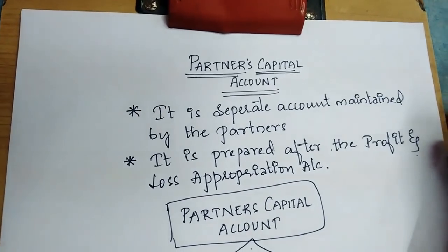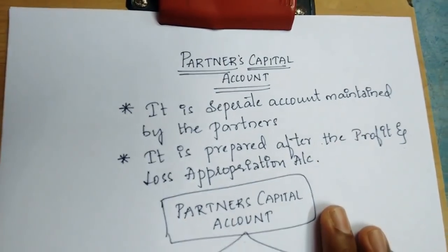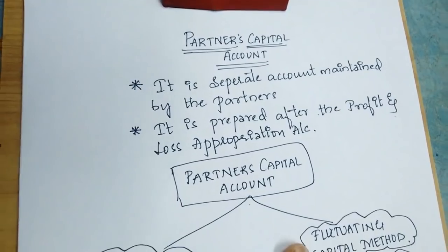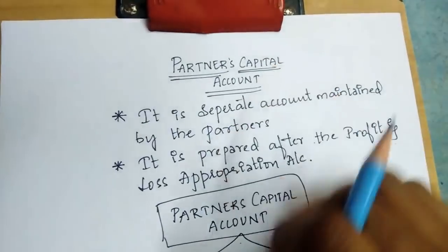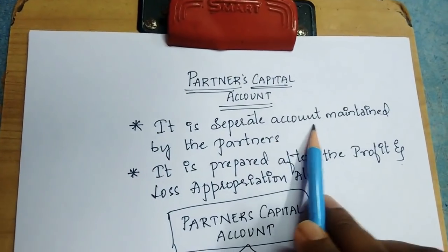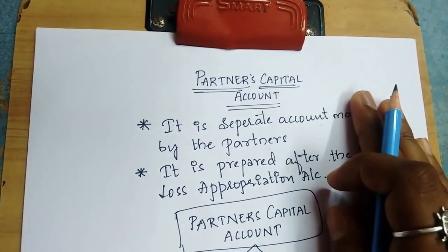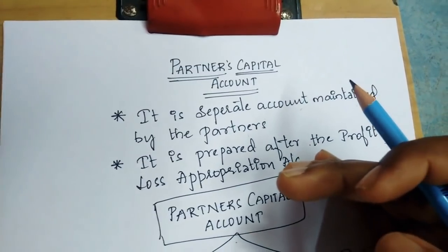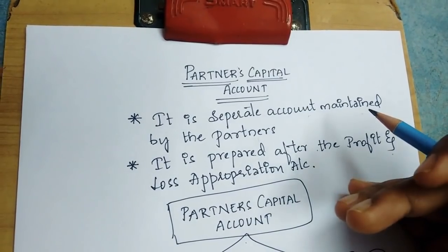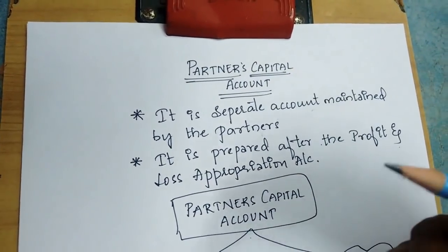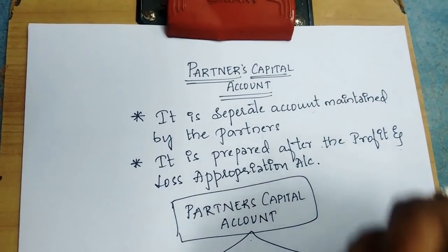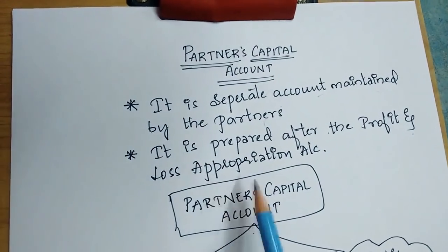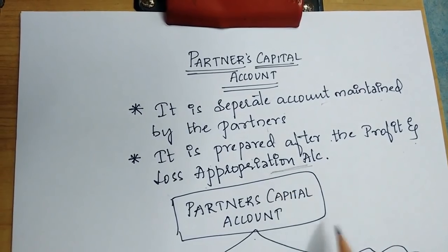We discussed interest on capital calculation in the last class. Let us move on to the next topic: partner's capital account. A partner's capital account is a separate account maintained by each partner. If I am a partner of a partnership firm, I have capital contributed. Profits and losses are shared, and any drawings are recorded in this separate account, which is called the partner's capital account.